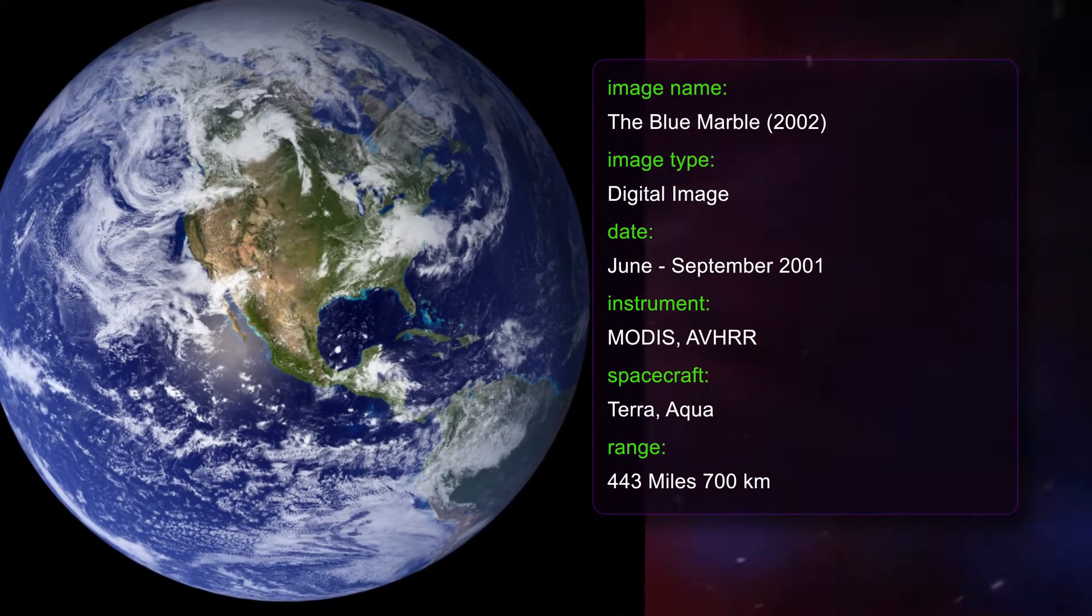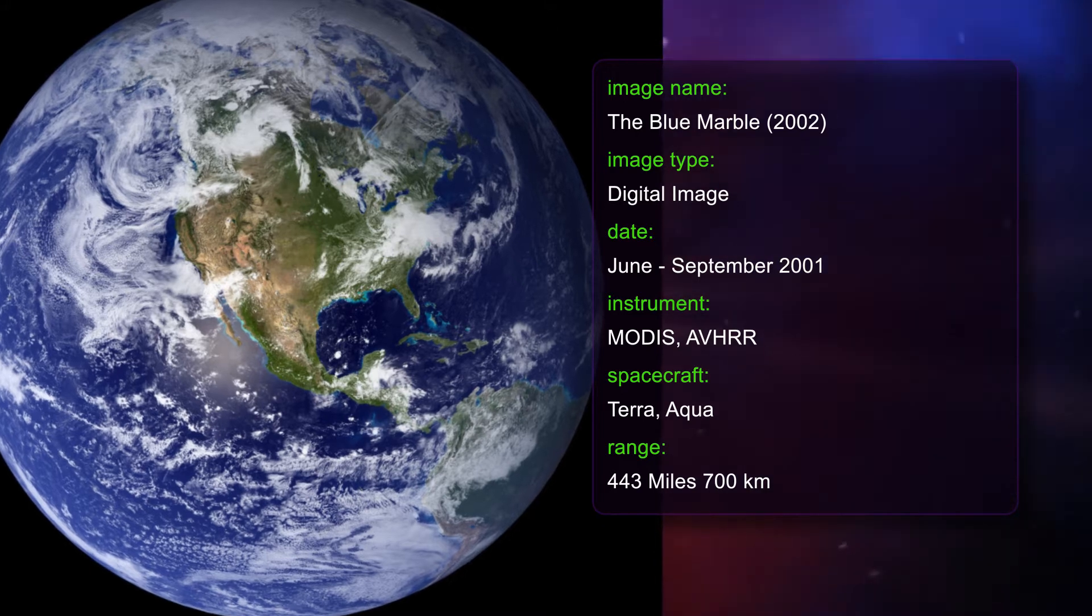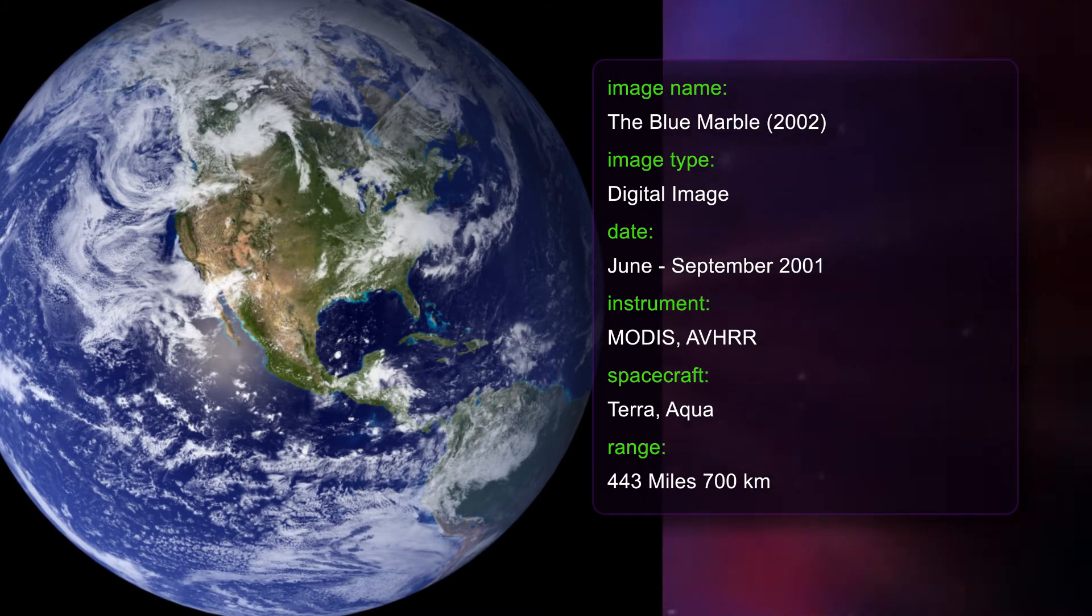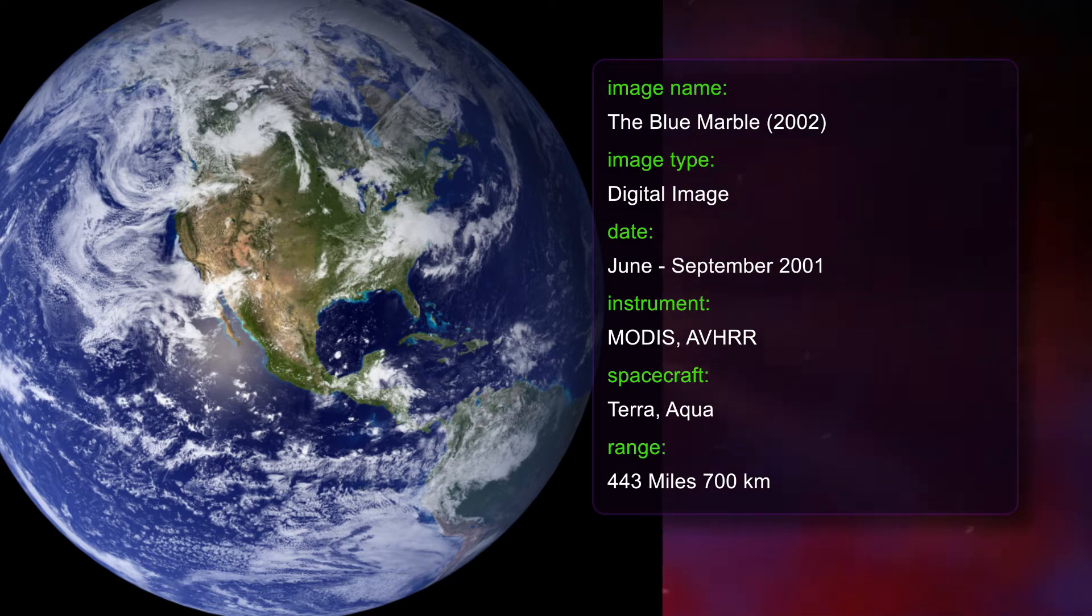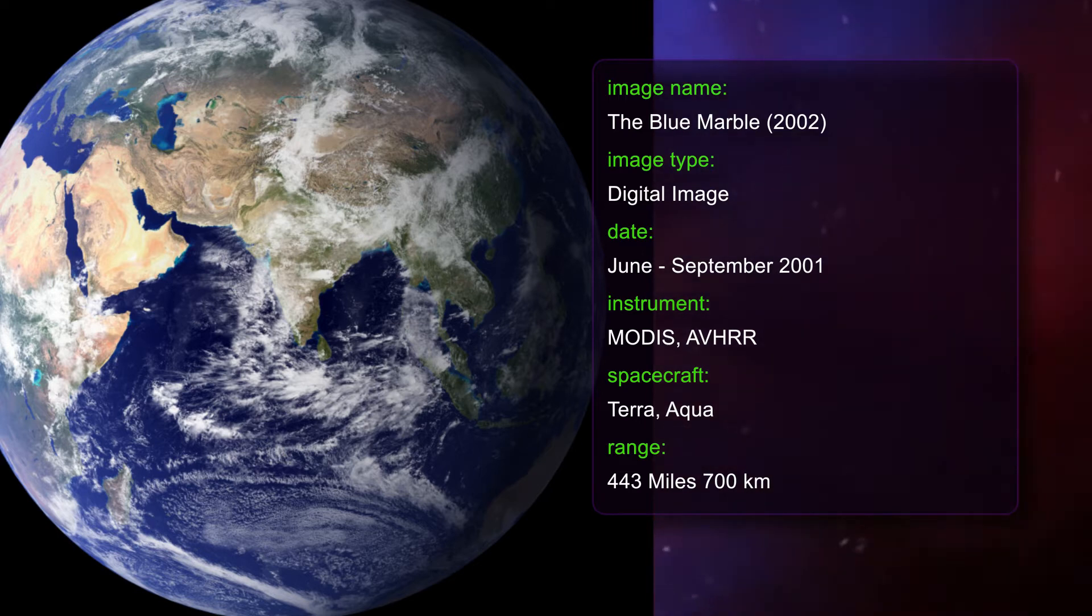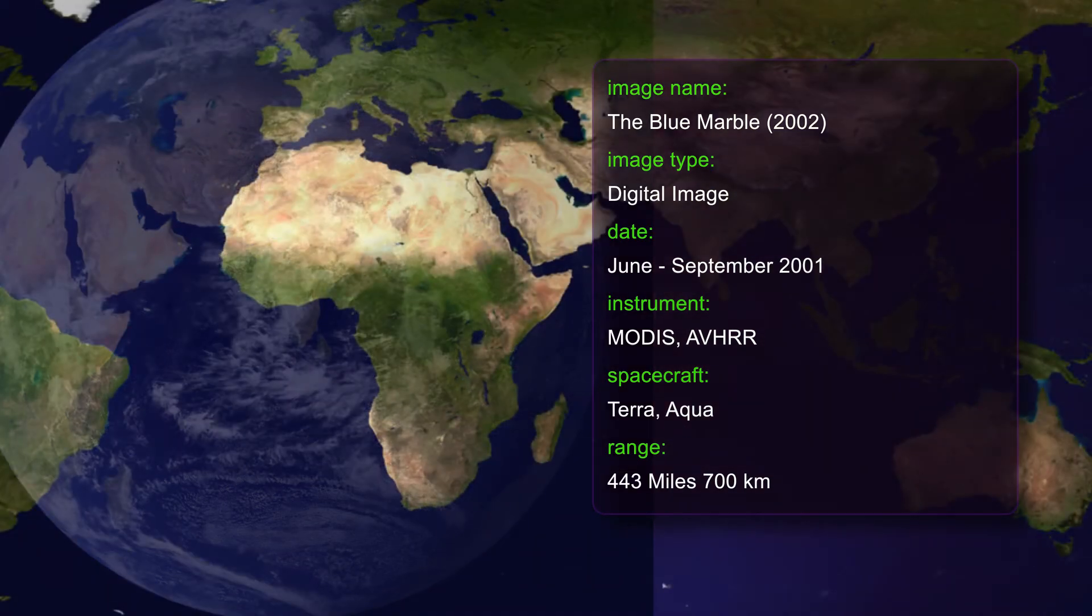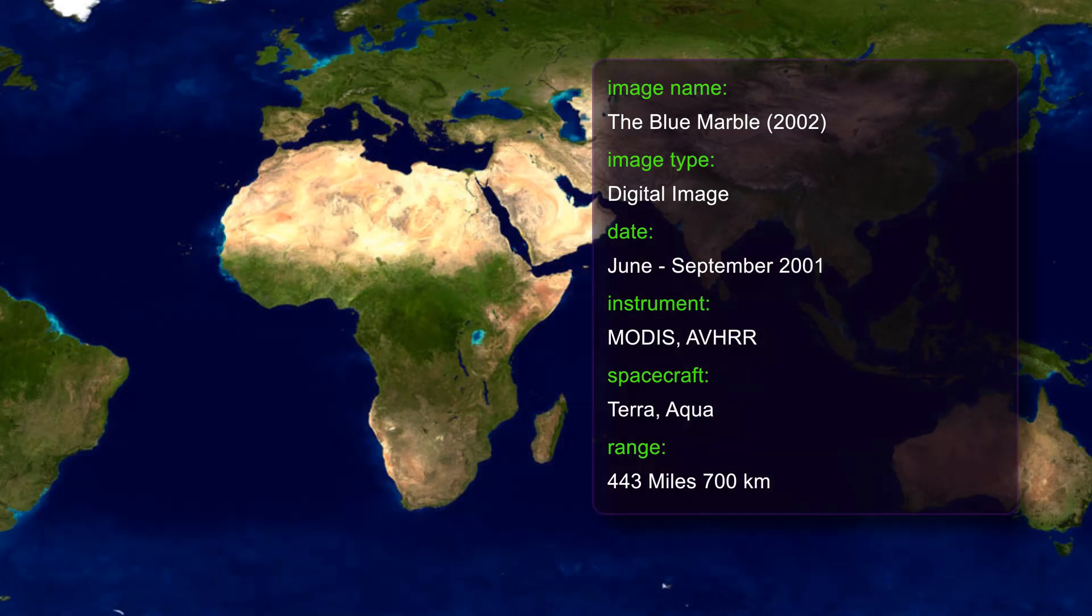The land and coastal ocean portions of these images are based on surface observations collected from summer 2001 combined every eight days to compensate for clouds that might block the sensor's view of the surface on any single day. This allows visualizers to create a seamless very high resolution true color mosaic of every square kilometer of our planet with no cloud cover which is then draped over an elevation model of the Earth.